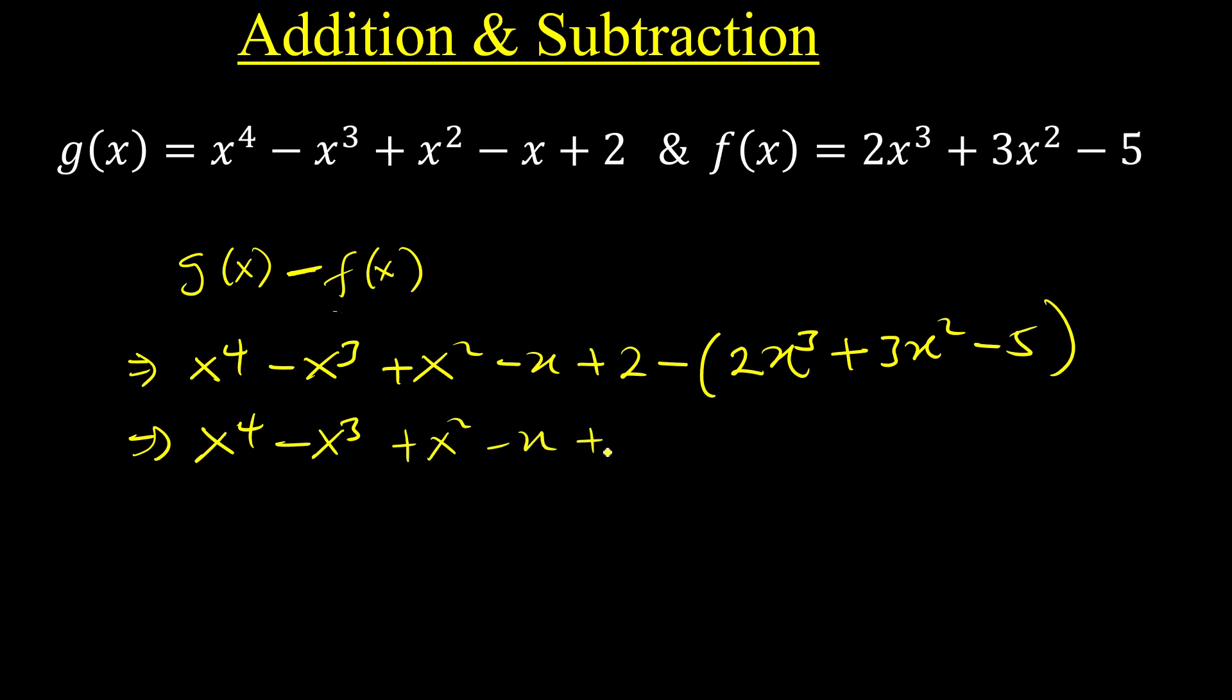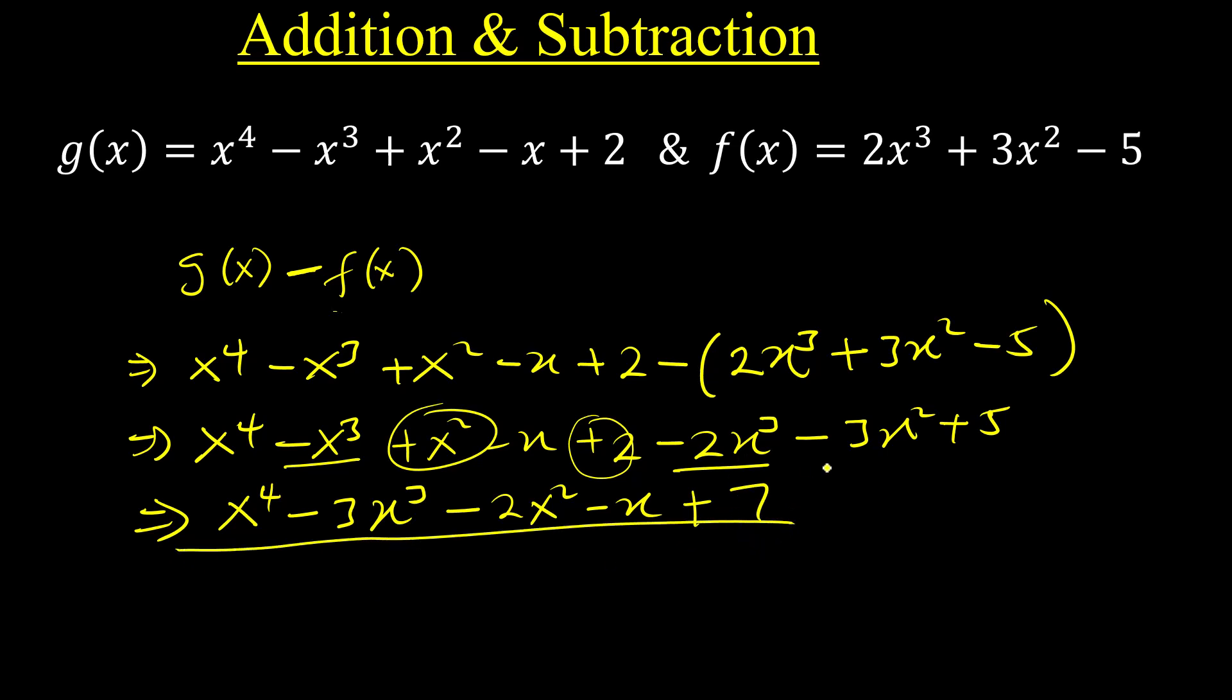This negative affects everything, so we get -2x³ - 3x², and minus minus becomes plus. Grouping like terms: x⁴, then -x³ - 2x³ = -3x³, then x² - 3x² = -2x², then -x, then +2 + 5 = +7. The answer is x⁴ - 3x³ - 2x² - x + 7.